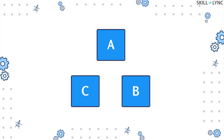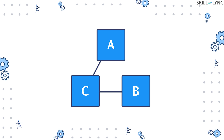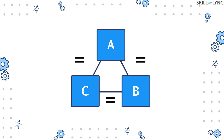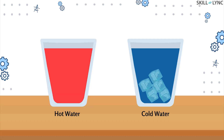According to the zeroth law, if the temperature of two systems is equal to the temperature of a third system, then they are equal in temperature to each other. This can be understood using the example of the two glasses of water we talked about earlier.